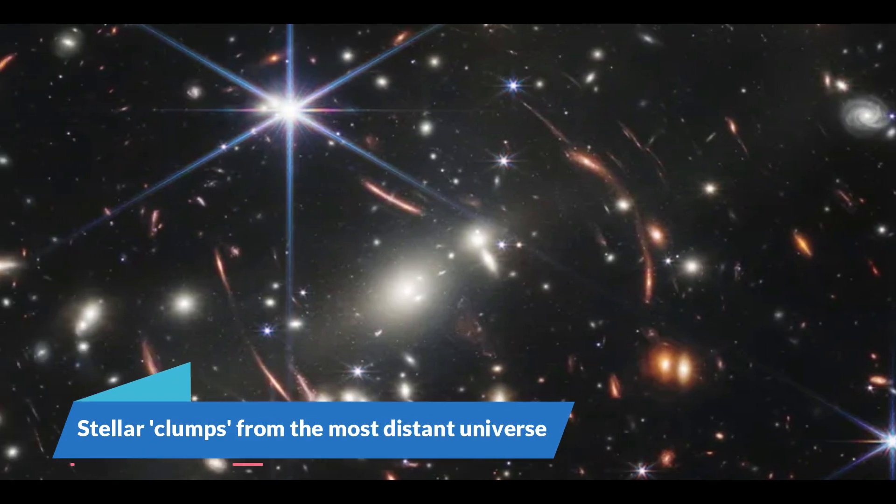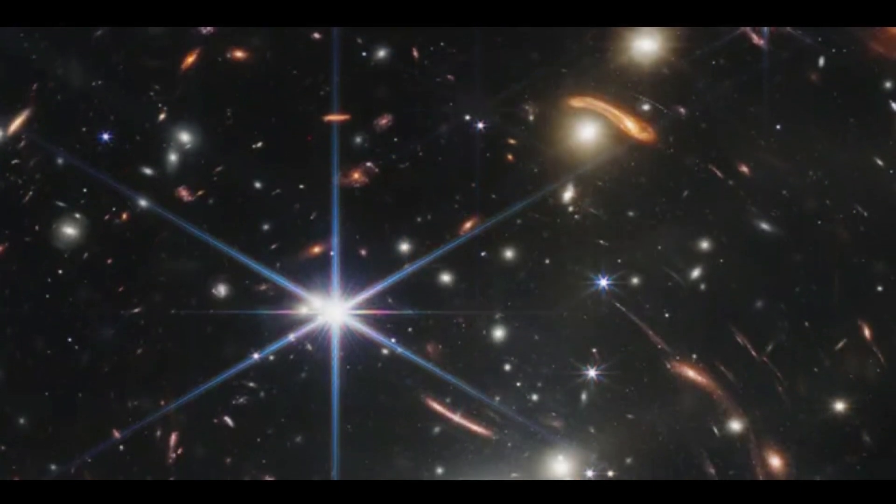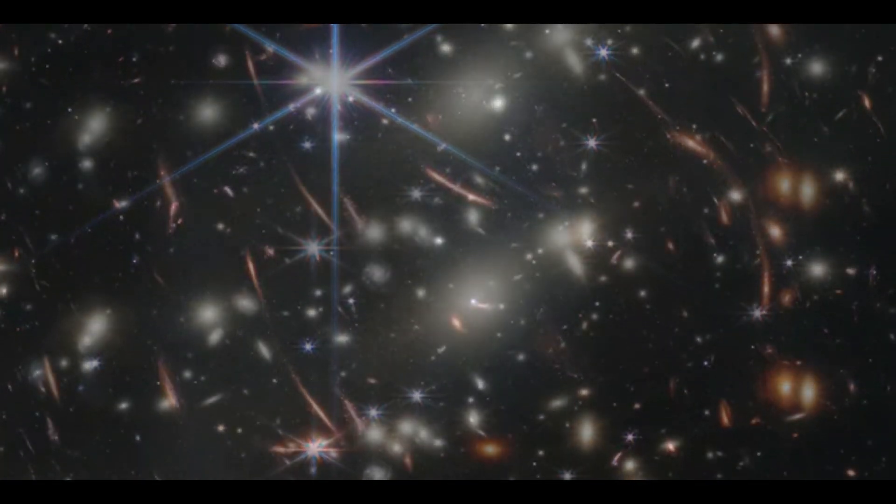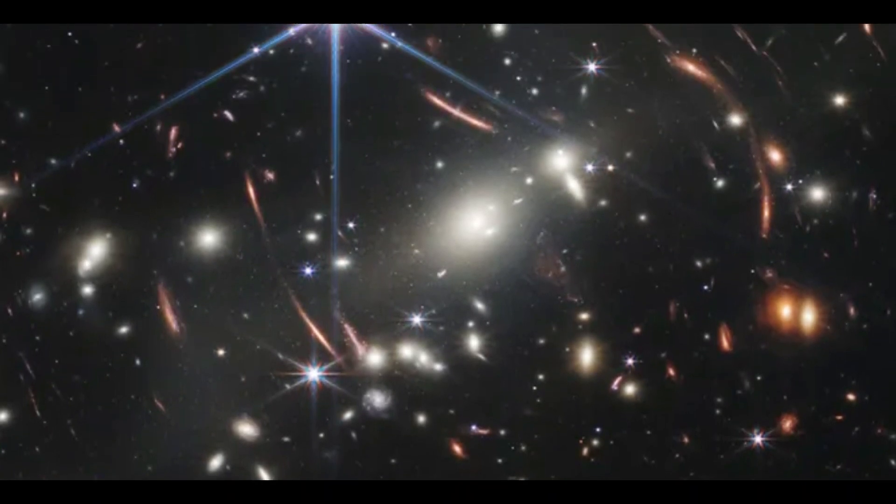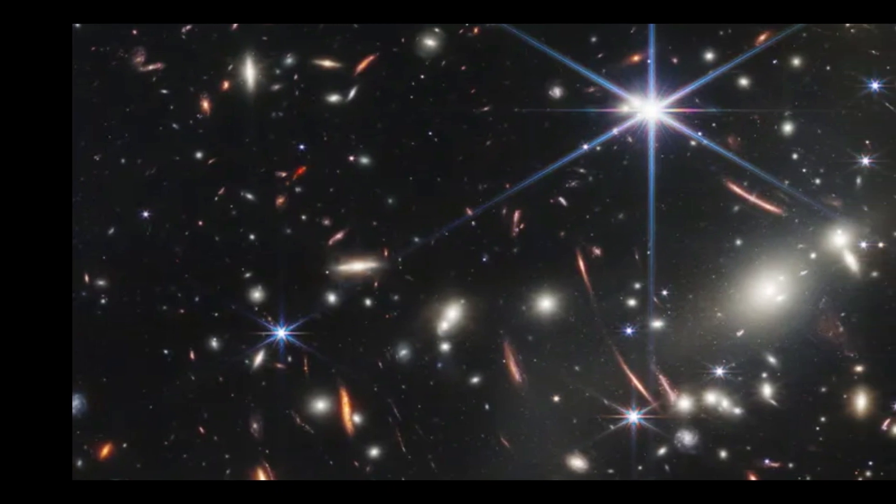Number six, stellar clumps from the most distant universe. Astronomers can view the earliest phases of galaxy creation in a cosmos that is less than 1 billion years old using NASA's James Webb Space Telescope and nature's own magnifying tool, gravitational lenses.